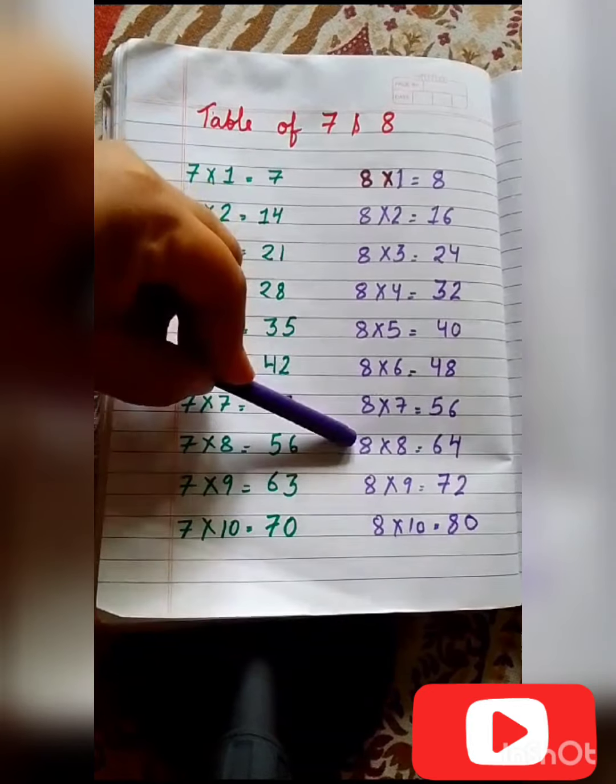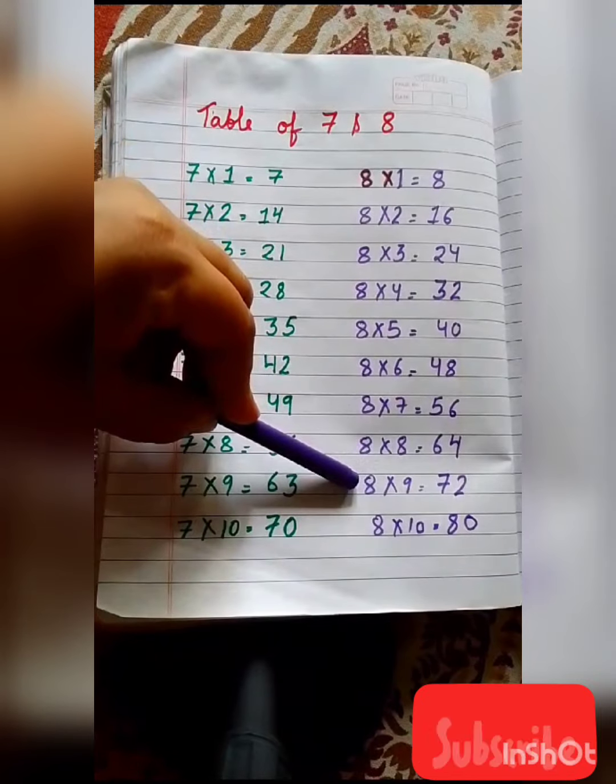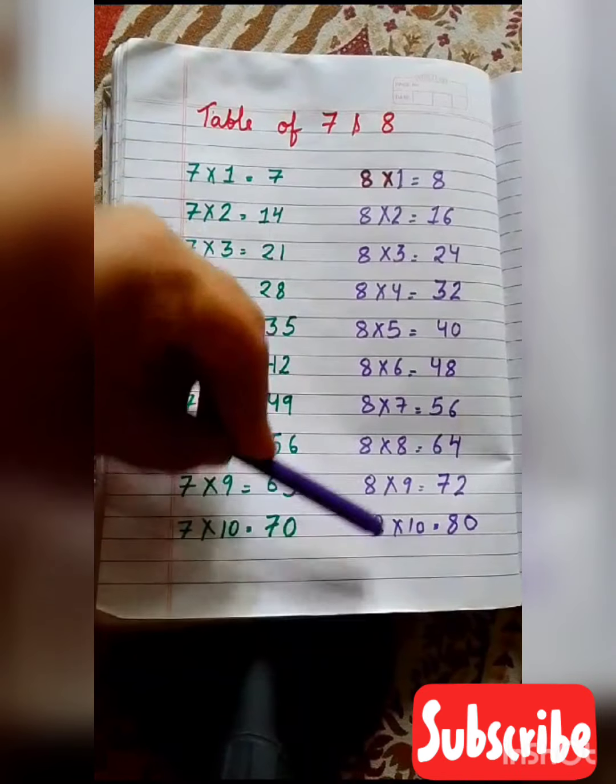8 sevens are 56, 8 eights are 64, 8 nines are 72, 8 tens are 80.